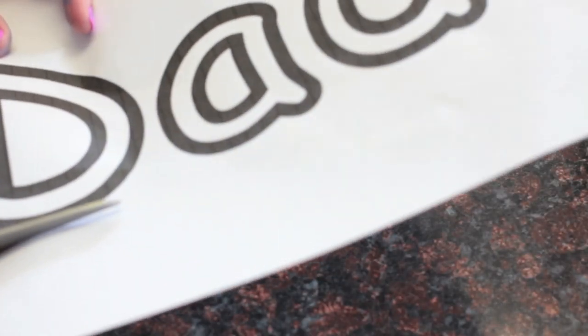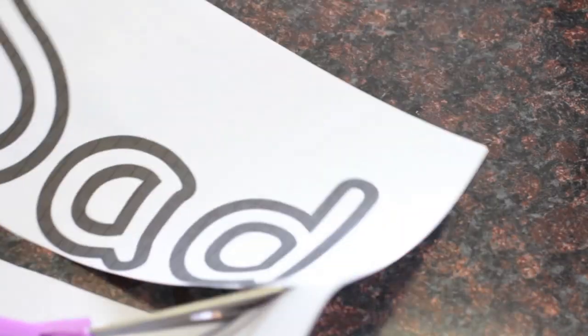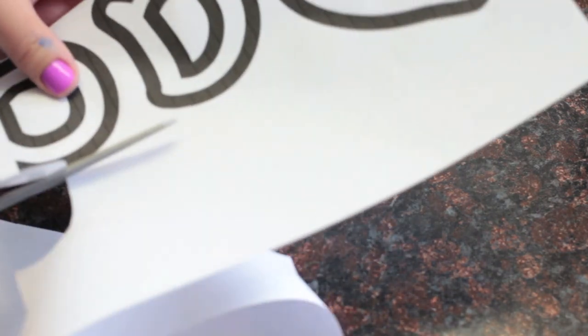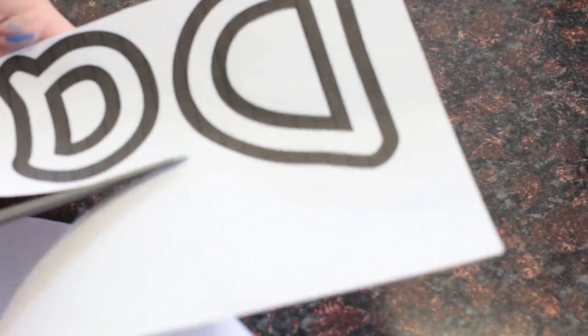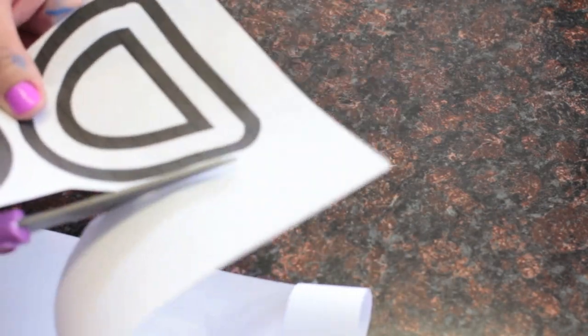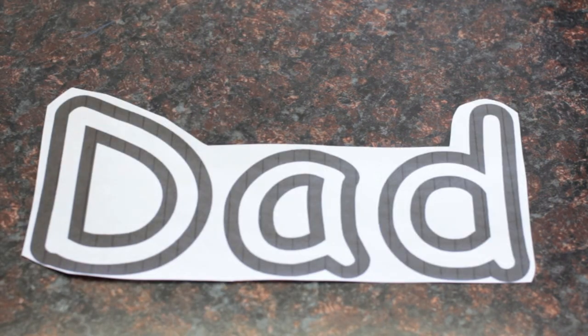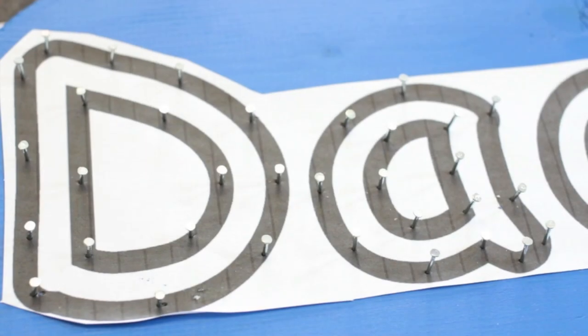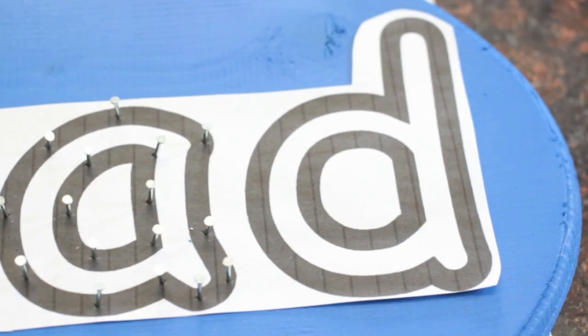Find a word or phrase that you want to put on the plaque. Cut around it to get rid of the excess paper and then center it on the plaque. Once it's centered, you can start nailing it into place on the plaque.